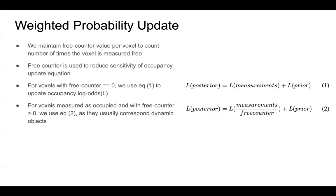To achieve slow update of the occupancy map, we maintain a free counter value per voxel. The free counter value indicates the number of times the voxel has been measured free. It is incremented by one every time the voxel is measured as free and decremented by one when measured as occupied. The lower threshold for the free counter value is set to zero. We represent the occupancy score of voxels using log odds. For voxels with a free counter value of zero, we use equation one to update the occupancy log odds score. For voxels with free counter value greater than one, we use equation two, where we divide the measurement update by the free counter value to slow down the update.